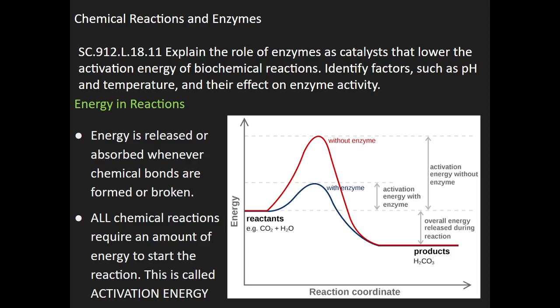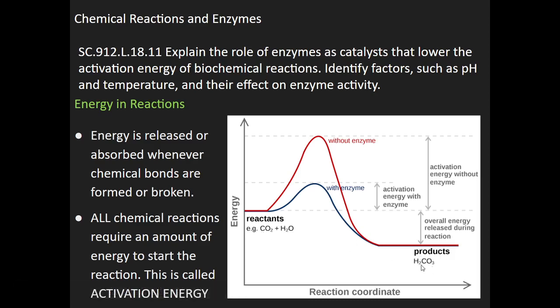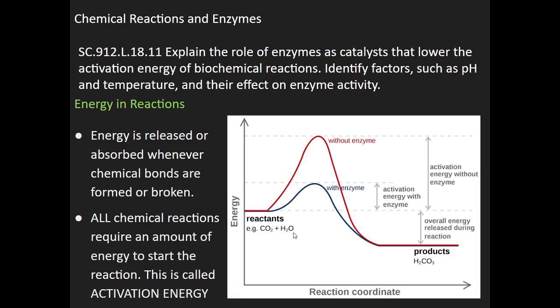All chemical reactions require an amount of energy to start the reaction, and this is called activation energy. That reaction can go back and forth, but you can't do that constantly because there's a little bit of energy required to go either way — there's always going to be less energy created than there was used. Sometimes chemical reactions happen in our body in milliseconds, and we have to have all this functioning at an optimal level in order for us to be healthy.